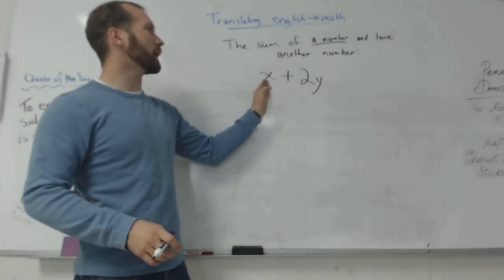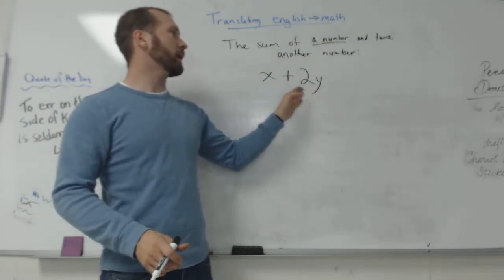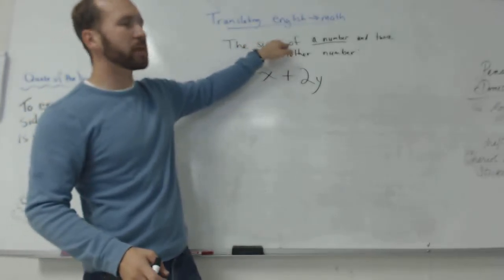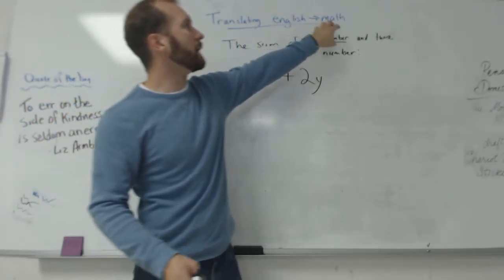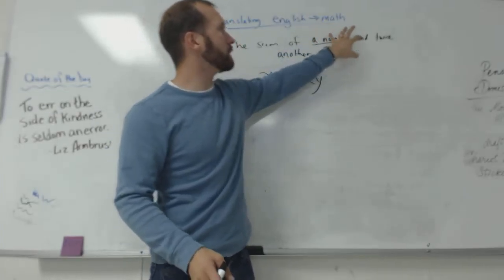We're trying to follow along the sentence one step at a time. A number, that's X. Twice, that's two. Another number, that's Y. But because we have this sum thing out front, it's telling us we're adding this and this.